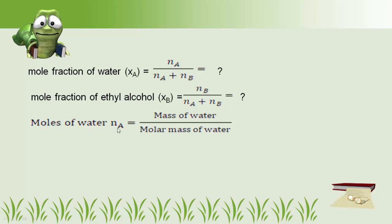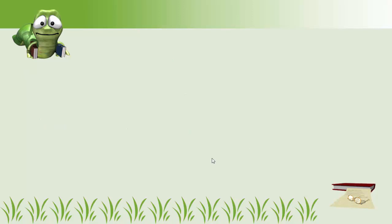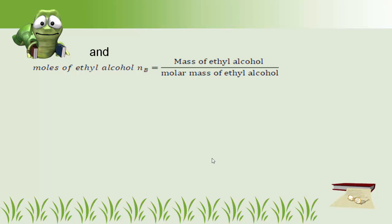Moles of water Na = mass of water / molar mass of water = 54 g / 18 g/mol = 3.0 mol. Similarly, moles of ethyl alcohol NB = mass of ethyl alcohol / molar mass of ethyl alcohol = 33 g / 46 g/mol = 0.7 mol.